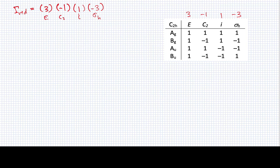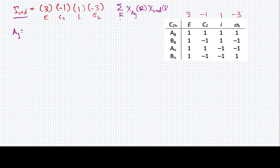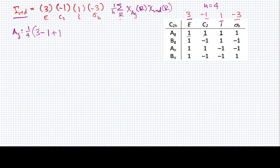For the Ag component, I take 1 over 4 times the sum of chi Ag times chi reducible for each operation. Multiplying each pair: 1×3 gives 3, 1×(−1) gives −1, 1×1 gives +1, and 1×(−3) gives −3. The sum is 0, so the coefficient for Ag is 0.